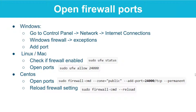You merely need to click the Exceptions tab, then click Add Port, and begin to add the Luminati proxy manager ports that you have created. You can also find a link to a Windows tutorial in our Luminati FAQ for opening a firewall port.